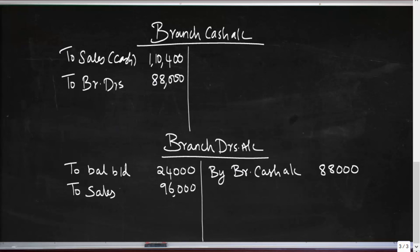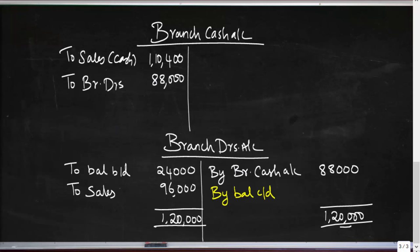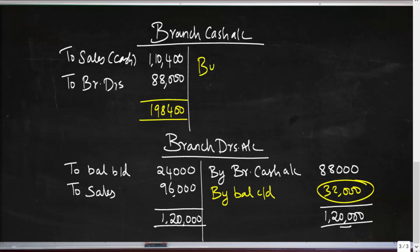Totaling the branch debtors account — opening balance plus credit sales gives the higher side total of 1,20,000. Cash received from debtors is 88,000, so the closing balance of debtors is 1,20,000 − 88,000 = 32,000. Branch cash totals 1,98,400, which is transmitted to head office — 'by cash transmitted to head office' 1,98,400.